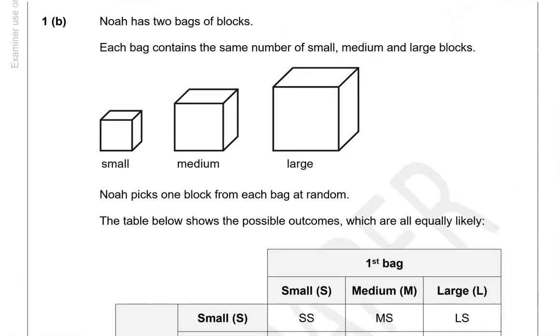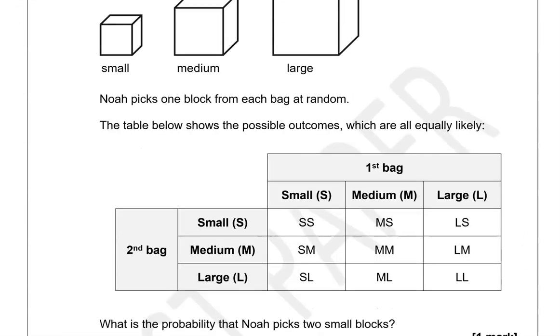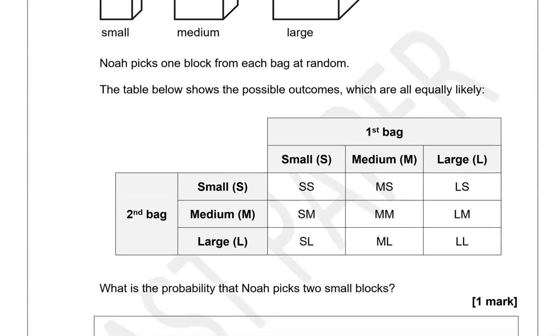Noah has 2 bags of blocks. Each bag contains the same number of small, medium and large blocks. Noah picks 1 block from each bag at random. The table below shows the possible outcomes which are all equally likely. What is the probability that Noah picks 2 small blocks?